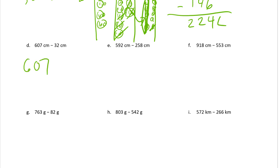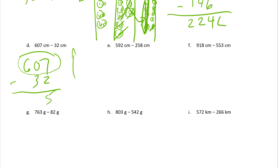Six hundred seven minus thirty-two. Here we have plenty of ones — seven. We can take away two ones from seven. But we don't have any tens. This top number is your minuend. You can't subtract zero from the three by subtracting up. We always want to start with our minuend — it's zero minus three, and you can't do that because you don't have enough tens.